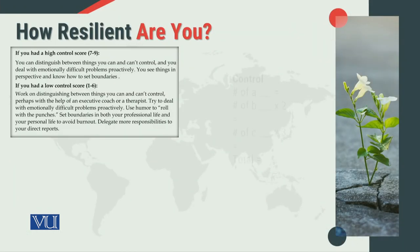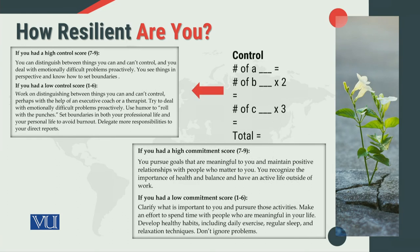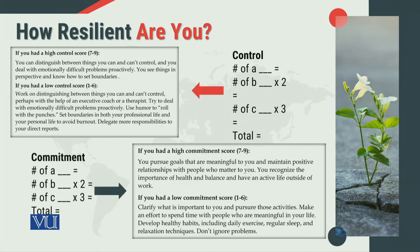Ishi tarha, how resilient are you? Iske baare mein jab hum control aspect aur commitment aspect ko calculate karayenge, toh humare paas parameter wohi hooga to find out the score. For example, it can be 1, 1, and 1 — so agar ham isko total karay, 2 into 1 would be equal to 2 and 3 into 1 would be equal to 3. So that would make about 6 as the score. Agar aapki control ki score 6 aa rahi hai, toh actually you are in this category.